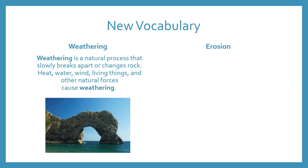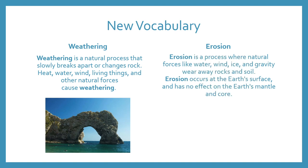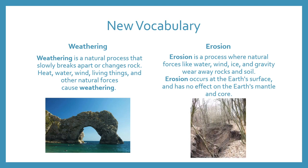Now let's learn a little bit about erosion. Erosion is a process where natural forces like water, wind, ice, and gravity wear away rocks and soil. Erosion occurs at the earth's surface and has no effect on the earth's mantle and core — those are the two innermost layers of our earth. Here is a picture of erosion.